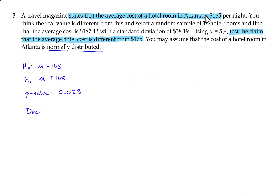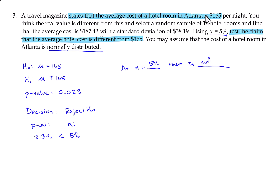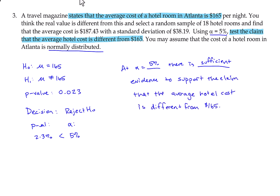We'll use that in making our decision. The p-value here is 2.3% and alpha is 5%. The p-value is less than alpha. If p is low, the null must go. So at alpha equals 5%, there is sufficient evidence to support the claim that the average hotel cost is different from $165.